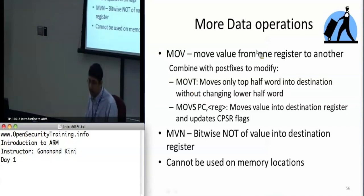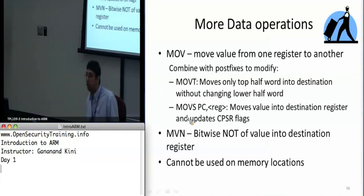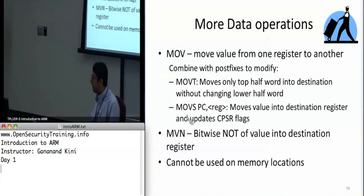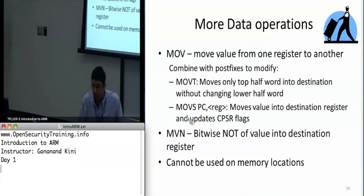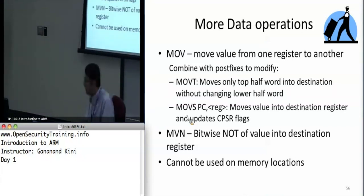Then there is MOVS PC. This is a special instruction because you're changing the program counter — you're telling it to do a branch. You're taking an instruction address, loading it into the PC, and telling it to branch to the instruction that's been updated in the PC.